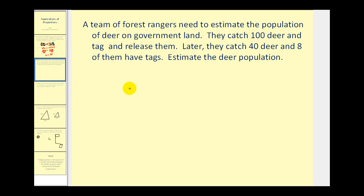We'll form two ratios that compare tagged deers to the total number of deer. So if they catch and tag 100 deer, the ratio of tagged deers to total deer would be 100 to x because we don't know the total number of deer. Then when they catch 40 and 8 of them are tagged, 40 would be the total number of deer and 8 would be the number tagged. Notice these ratios are consistent. We're comparing tagged deer to total deer here and tagged deer to total deer here. That's important because we can't change the order of the ratios and still form a proportion.